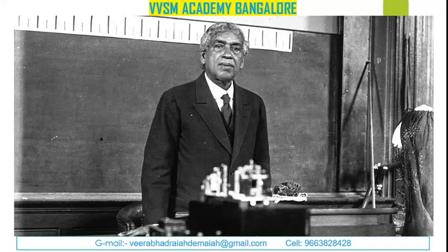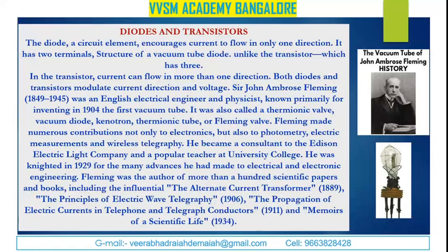Diodes and transistors — a diode is a circuit element that encourages current to flow in only one direction. As discussed in the previous class, it has a two-terminal structure, unlike the transistor which has three. We have already discussed the distinction between a diode and a triode, and its origin and discovery. Today let us discuss the transistor. Current can flow in more than one direction; both diodes and transistors moderate current direction and voltage.